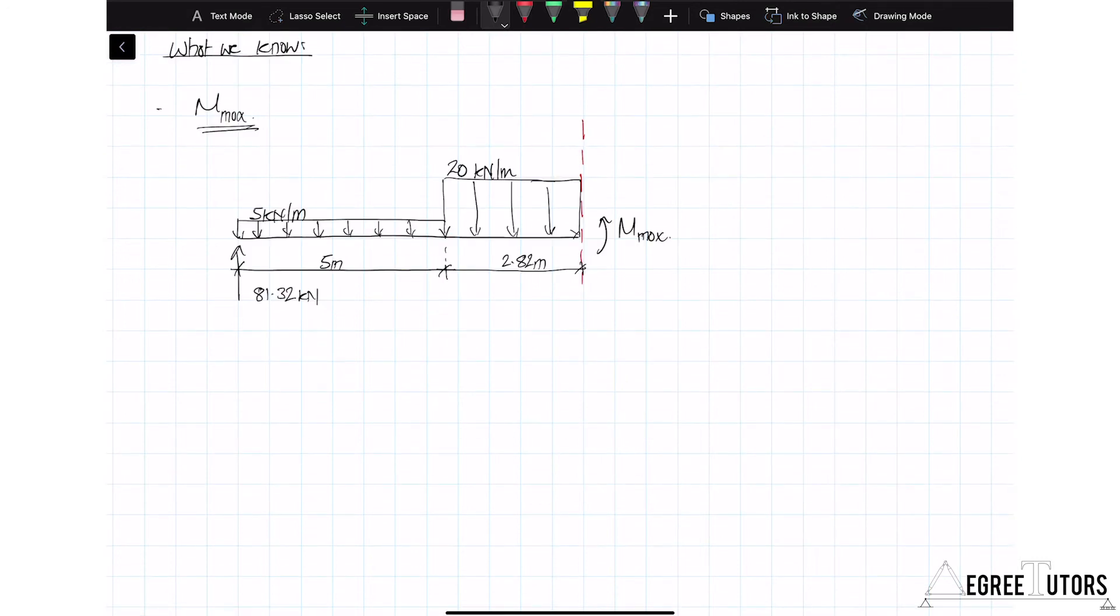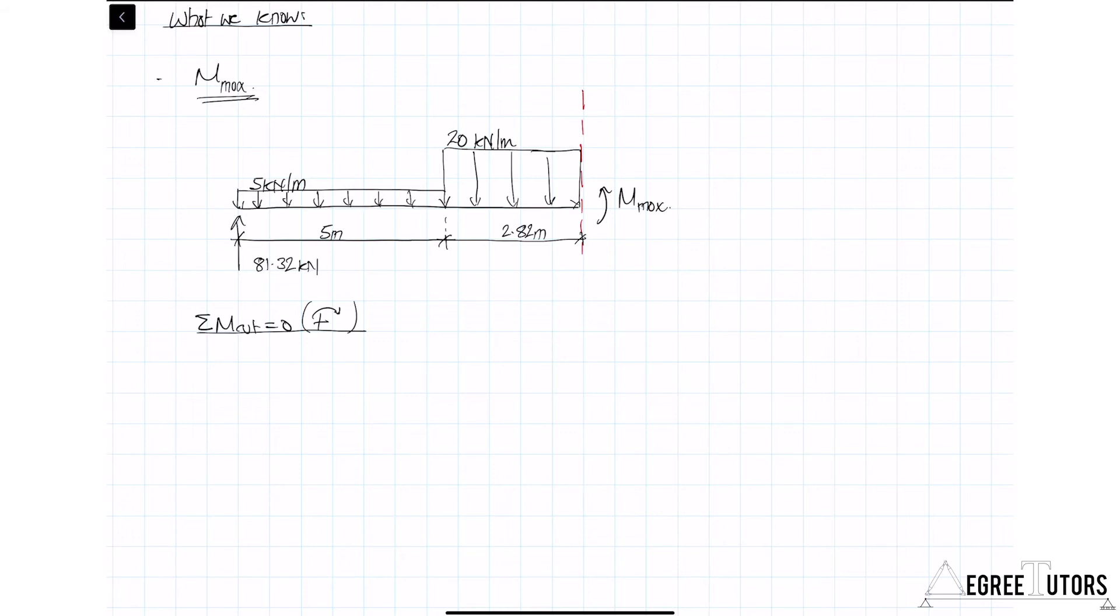All right then, so taking moments about the cut: we've got -M_max + 81.32 × 7.82 meters - 5 kN per meter × 5 meters × a lever arm of 5.32 meters - 20 kN per meter × 2.82 meters × 2.82/2, which is the lever arm, and that equals zero. When we solve all of that for M_max, we get the value of M_max equal to 423.4 kN·m.